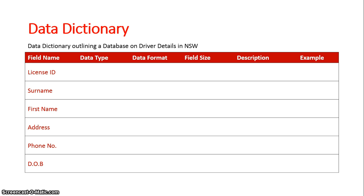We'll look at the license ID field first. Its data type will possibly be an integer — a numeric value assigned to each specific driver. The format would just be number-number-number-number-number. The field size needs to be known so that we can calculate the total size of the database by multiplying it by every record within that database.